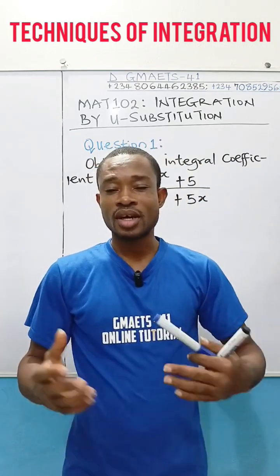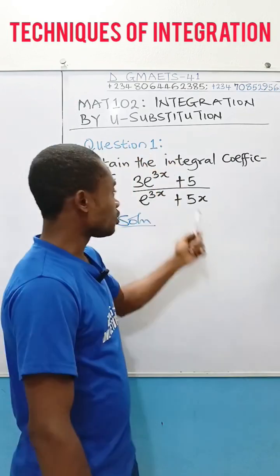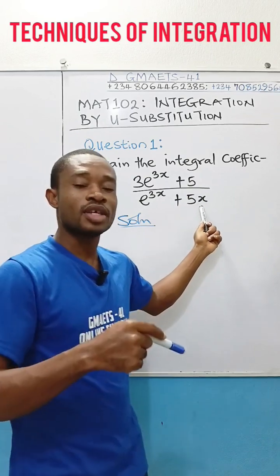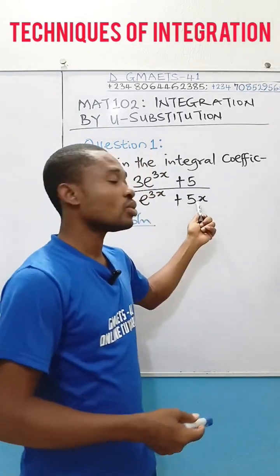Look at the numerator, you see an exponential term and a constant polynomial term. The denominator, you have an exponential term and a polynomial term also, but of degree 1.